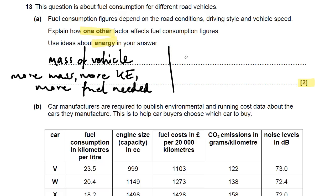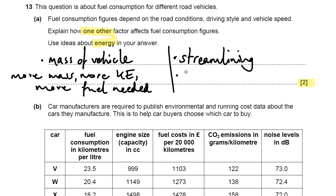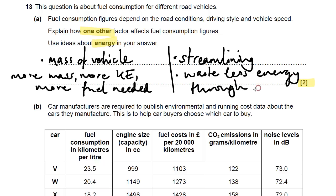The other idea could be the streamlining of the car — how streamlined is it? Don't put aerodynamics; aerodynamics is the science of air moving. Streamlining is actually making the car have a low surface area presented to the wind, to allow it to waste less energy through friction with the air, or drag, or air resistance.